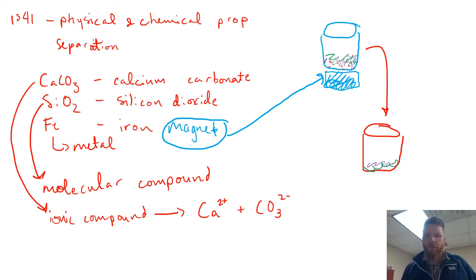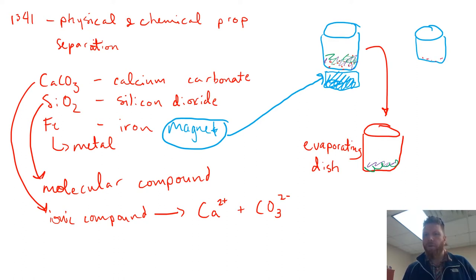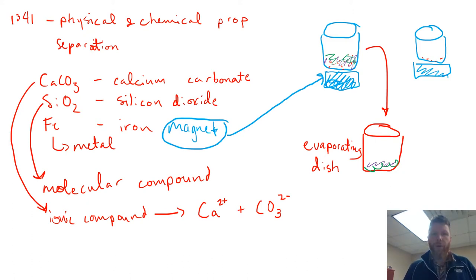You're going to pour this into a specific piece of glassware known as an evaporating dish. What remains in your first beaker are the pieces of iron, because the magnet brought them to the bottom of the beaker. So that's one separation — you're separating the iron from the silicon dioxide and calcium carbonate based on the physical property that iron is magnetic.